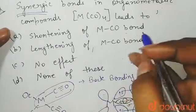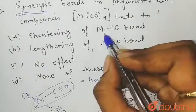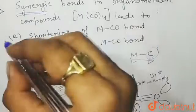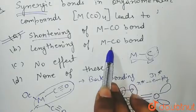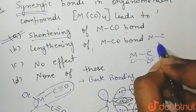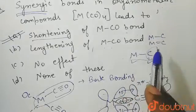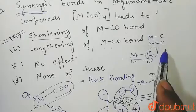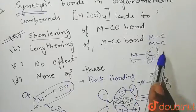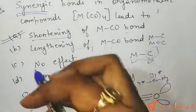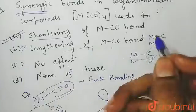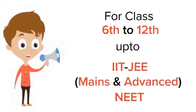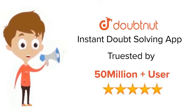Looking at the options: option A says shortening of M-CO bond — I just showed you that because it got double bond character, the M-C bond becomes shortened, so shortening is the correct answer. Option B, lengthening, is incorrect because it is converting from single bond to double bond character, so it shortens, not lengthens. Option C, no effect, is incorrect — there is an effect. Option D, none of these, is also incorrect. The correct answer is A. I hope you understood. Thank you! For class 6-12, IIT JEE and NEET level, trusted by more than 5 crore students — download Doubtnut today.